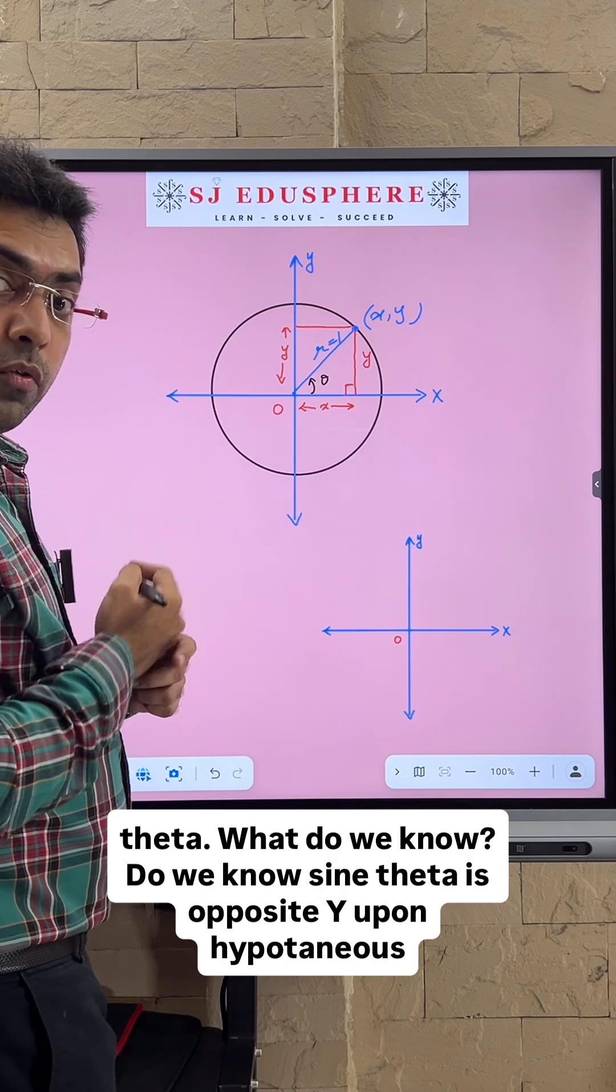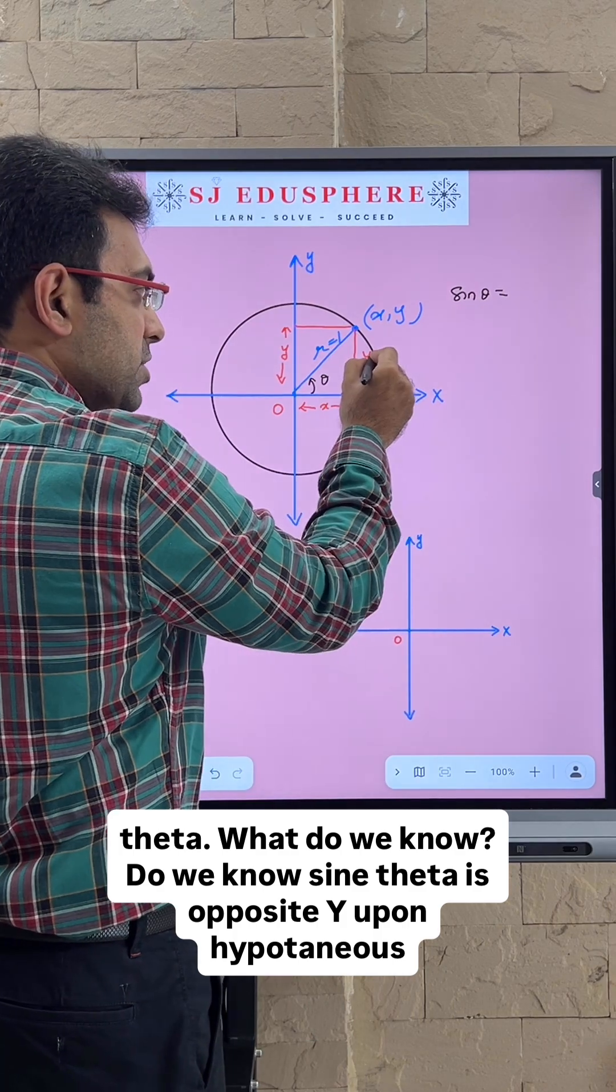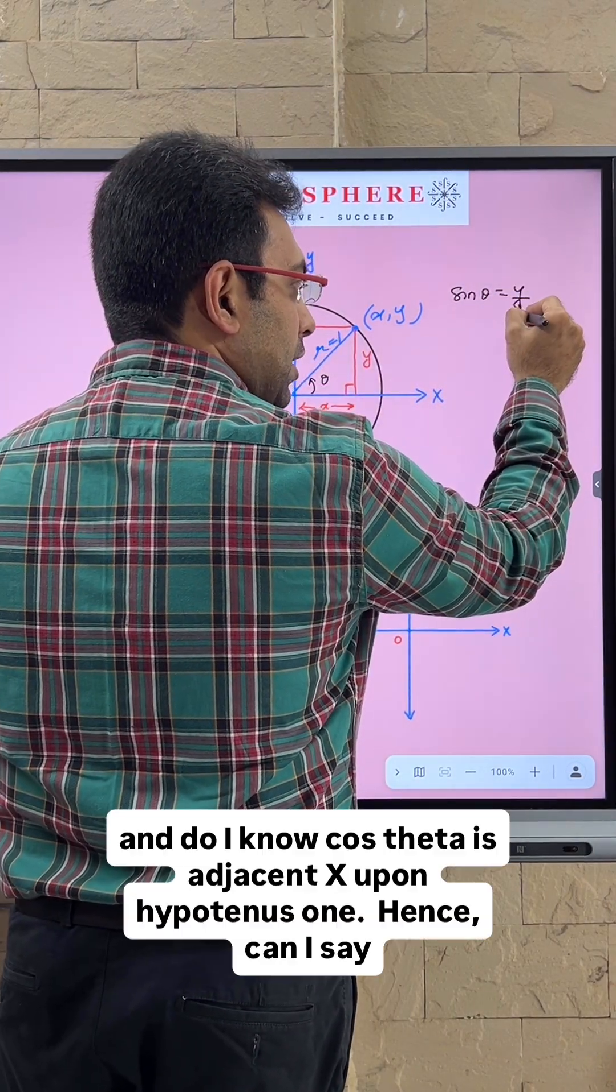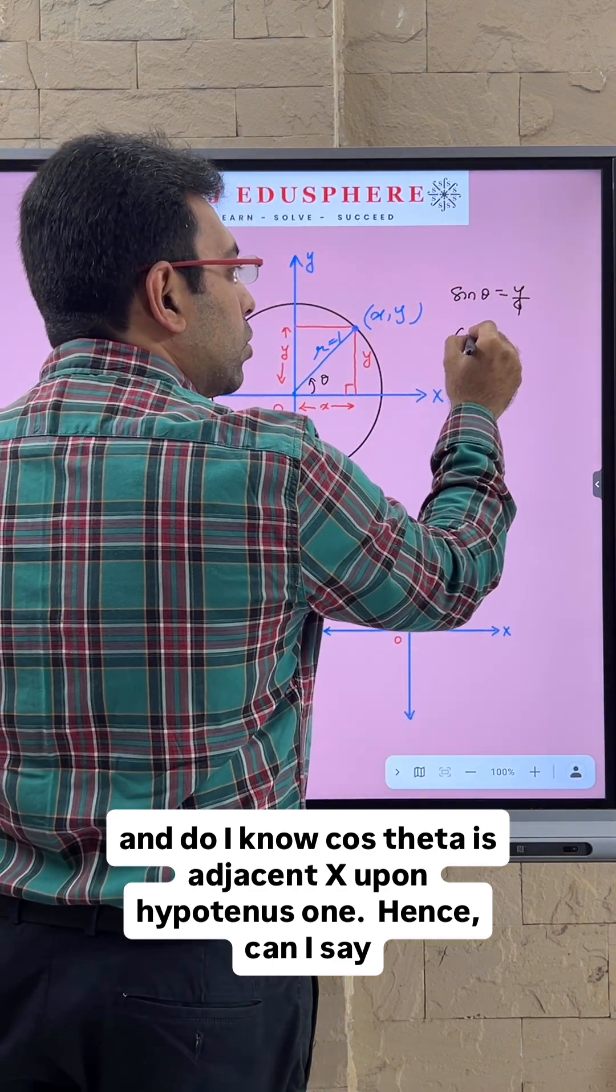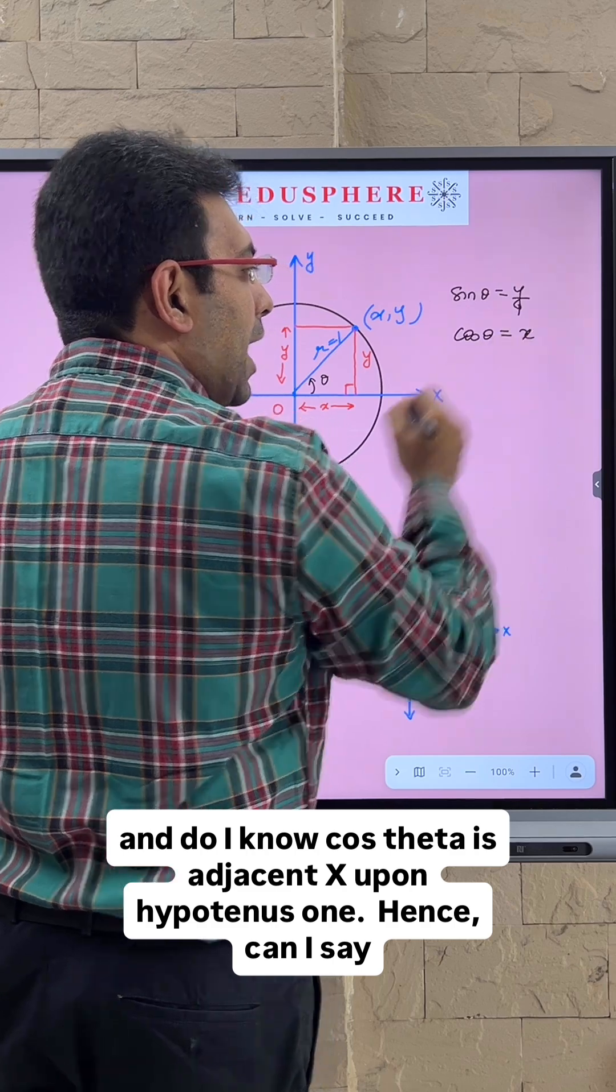What do we know? Sine theta is opposite y upon hypotenuse, which is 1. And cosine theta is adjacent x upon hypotenuse 1.